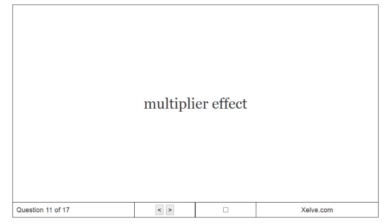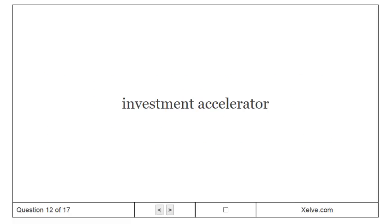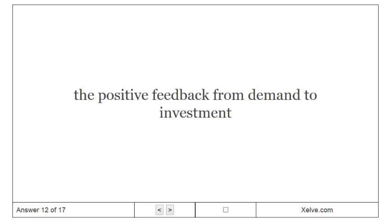Multiplier effect. The additional shifts in aggregate demand that result when expansionary fiscal policy increases income and thereby increases consumer spending. Investment accelerator: the positive feedback from demand to investment.